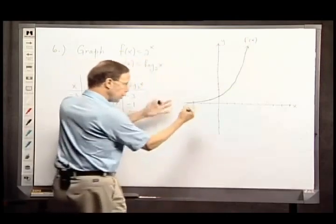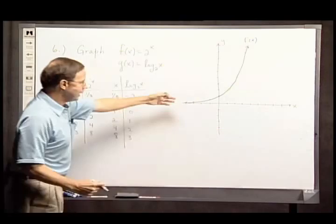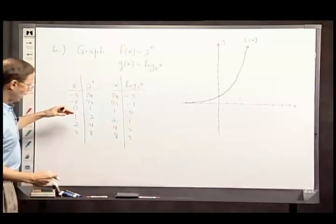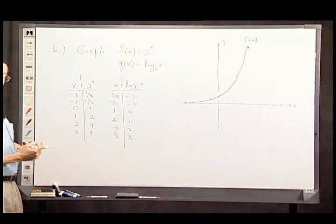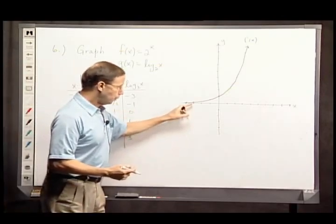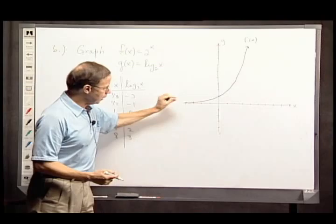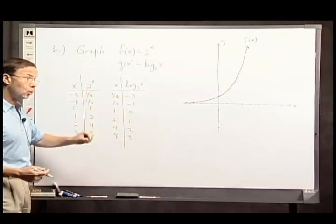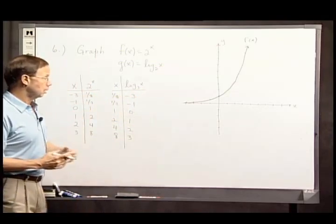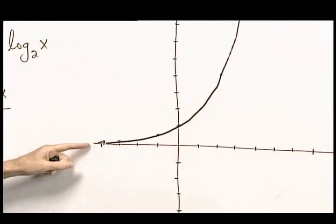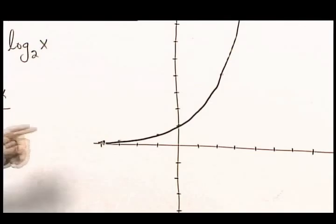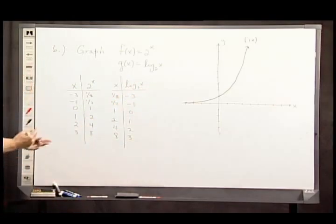This one, where is it going? Notice, with each step I take to the left, I have one fewer factors of 2. It's like I'm dividing by 2 as I move to the left. But no matter how many times I divide a positive number by 2, I still get a positive number. So, this graph is going to start hugging the x-axis, but it's never actually going to reach the x-axis.